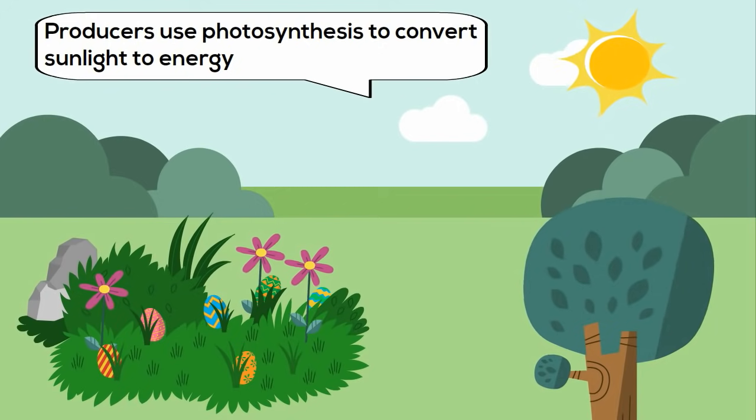Producers use photosynthesis to create their energy, and they are a very large source of energy in most ecosystems. Plants and algae are examples.